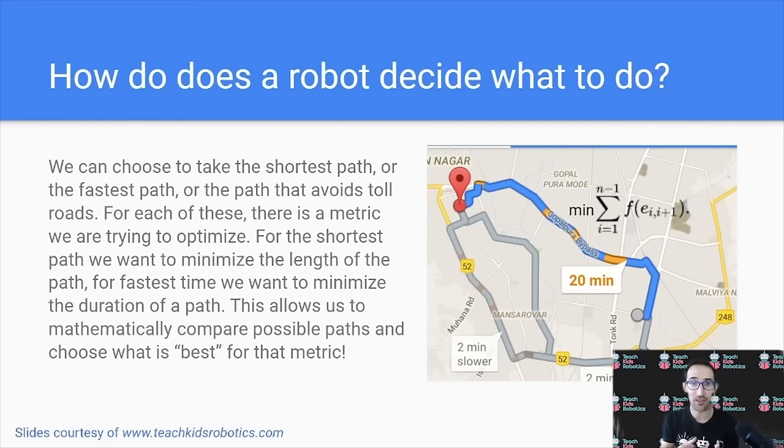So we can choose to take either the shortest path or the fastest path, or the path that avoids toll roads. But for all of these, there is a metric we are trying to optimize. For the shortest path, we want to minimize the length of the path. For the fastest time, we want to minimize the duration of a path. This allows us to mathematically compare best possible paths and choose what is best for that metric, whether it be distance, or time, or cost.